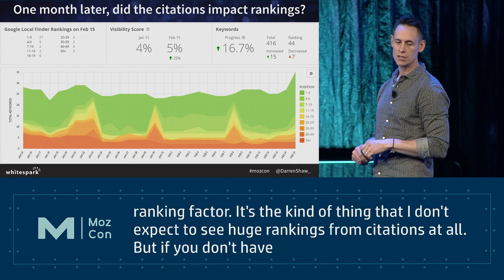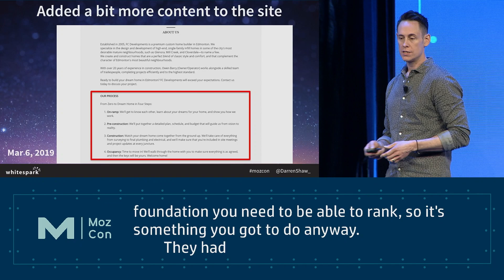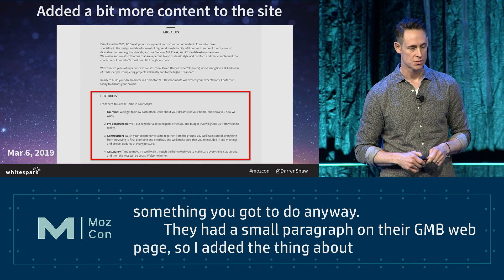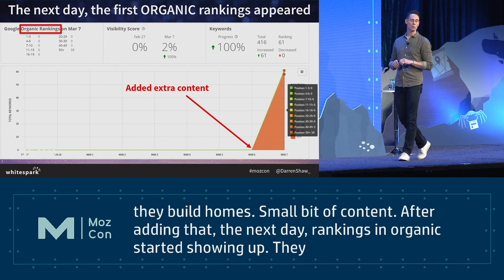Moving on to content - we just had a small paragraph on their GMB web page, so I added a whole section about the process of how they build homes. It was pretty small, just a little bit of content. But after adding that, the very next day, rankings in organic started showing up. They already had some local finder and local pack rankings, but we started to see our first organic ranking appear with just a little bit more content.